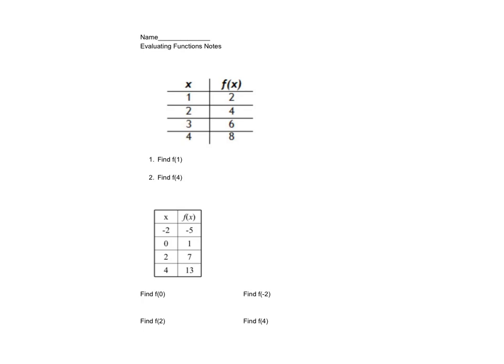We are going to look at how to evaluate functions for a given input. Remember, inputs are your x. So this first one says find the value of the function at 1, so f at 1. You need to find where x is 1 and read the output. So that would be 2. Question 2 says find f at 4. So f at 4 gives me 8.